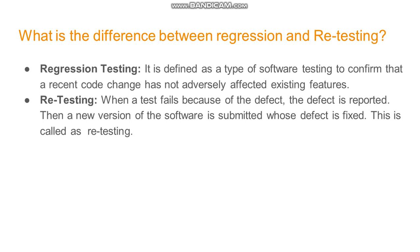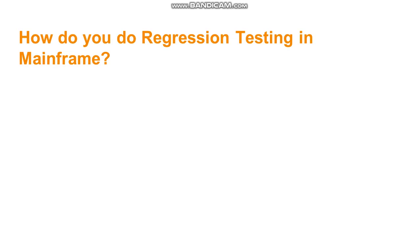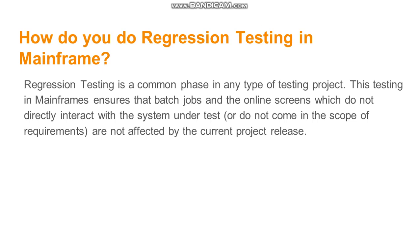What is the difference between regression testing and retesting? Retesting is when a test fails due to a defect, the defect is reported, and once a new version of the software arrives with the defect fixed, you retest that same scenario to verify it works. Regression testing is testing to ensure that a recent code change has not affected any other functionality. In mainframe, regression testing involves re-running batch jobs and online screens that don't directly interact with the changed system to check whether they are affected.